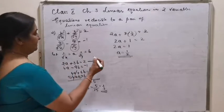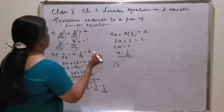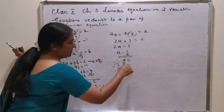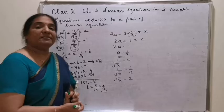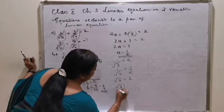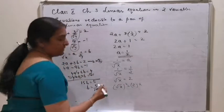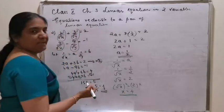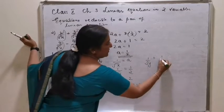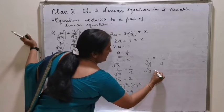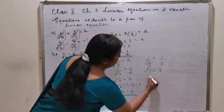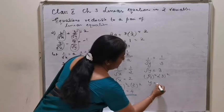Let's give back the substitution. 1 by root x is equal to a, that is 1 by root x is equal to 1 by 2. By cross multiplication, root x is equal to 2. To get x, squaring on both sides: root x squared is equal to 2 squared, so x is equal to 4. Similarly, 1 by root y is equal to b, which is 1 by 3, so root y is equal to 3. Squaring on both sides: y is equal to 9.